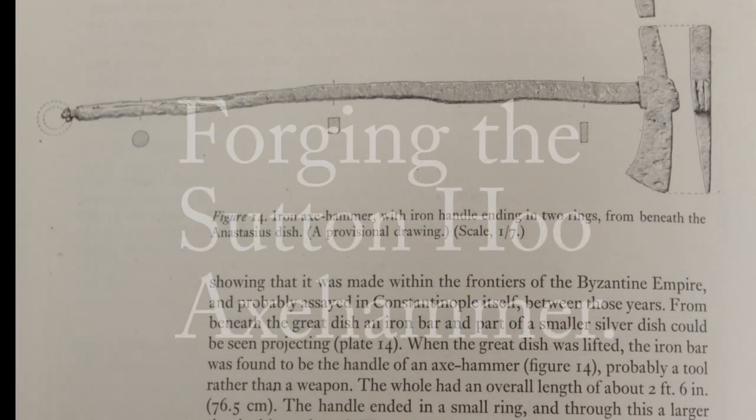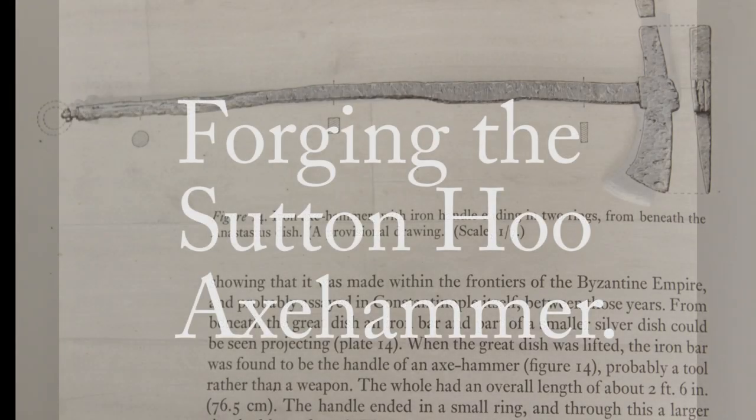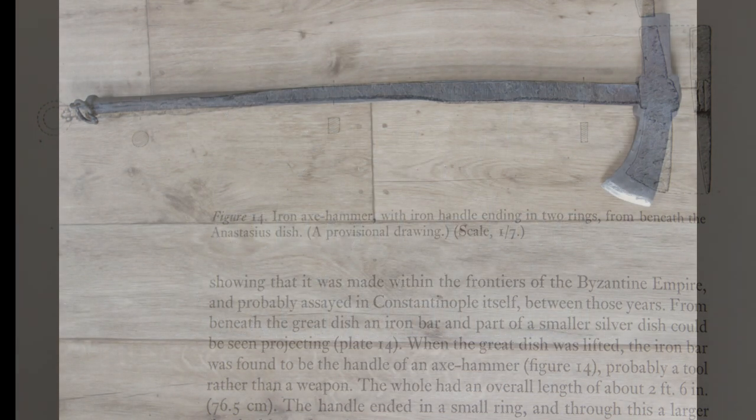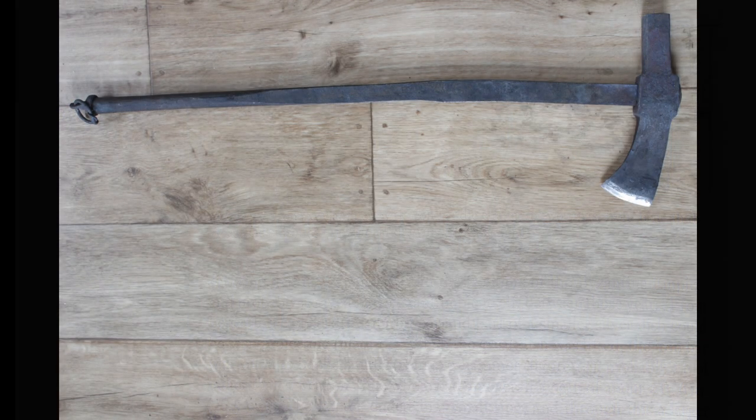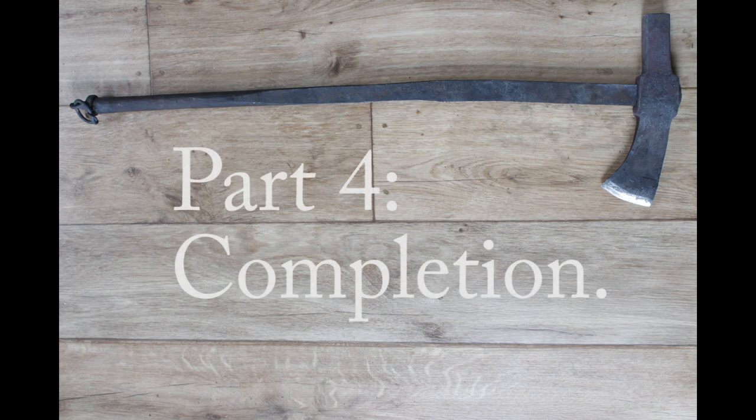Hello YouTube, welcome back. This is part 4 of reproducing the Sutton Hoo axe hammer. This is the final episode, so we are going to heat treat it, stick an edge on it, and create the ring.